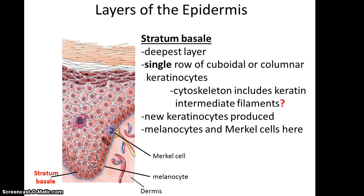The epidermis has a few different layers, or strata. The deepest layer is called the stratum basale, and it is a single row of cuboidal or columnar keratinocytes. The cytoskeleton within these epithelial cells includes keratin intermediate filaments. It is here and only here that new keratinocytes are produced. Also found on this layer are melanocytes and Merkel cells.